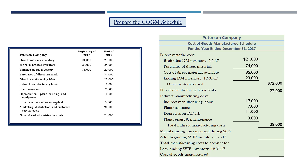Adding the $72,000 of direct materials, the $22,000 of direct labor, and the $38,000 of indirect manufacturing costs together, we find that Peterson Company spent $132,000 manufacturing goods during the period. That was the total amount of costs contained in goods they were making during 2017.